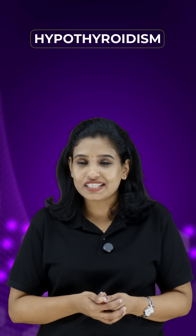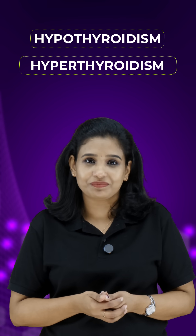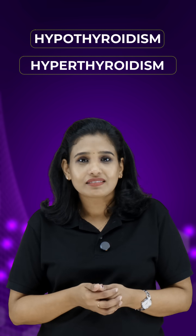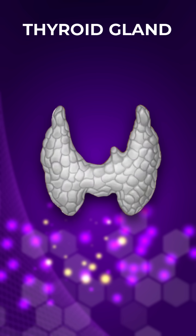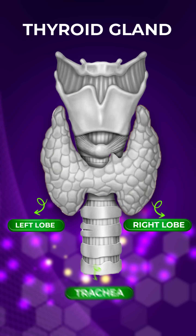Hypothyroidism vs. Hyperthyroidism. The thyroid gland is an important gland situated either side of the windpipe.